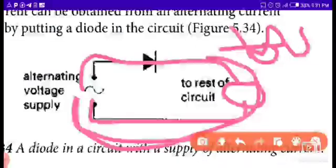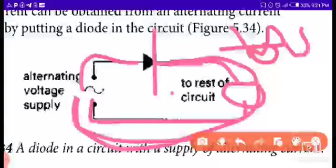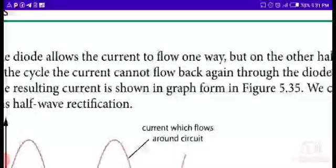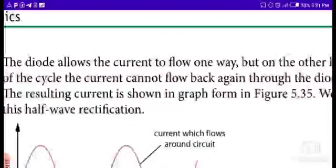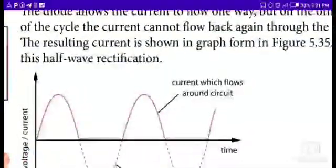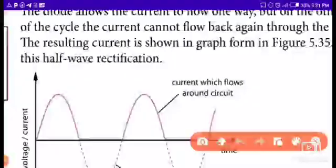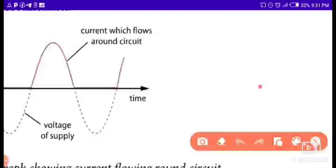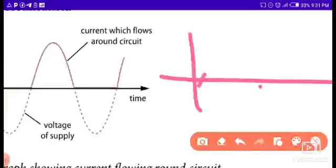Blocker. Another one. On one hand, but on other hand half, the second cannot flow back against through that diode. The resulting current is shown in the graph form in figures. The graph will show. This is half-wave rectification.